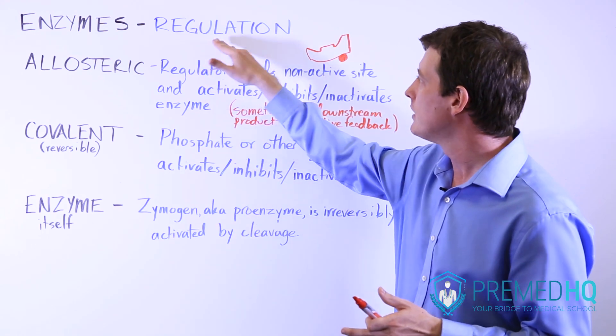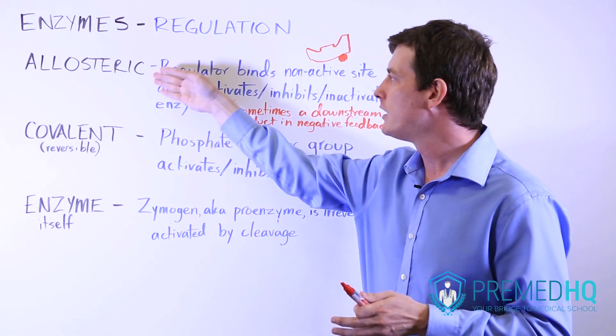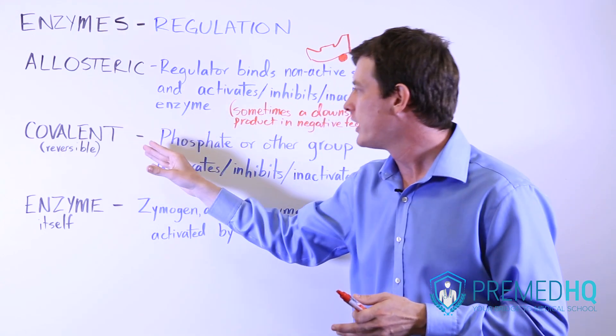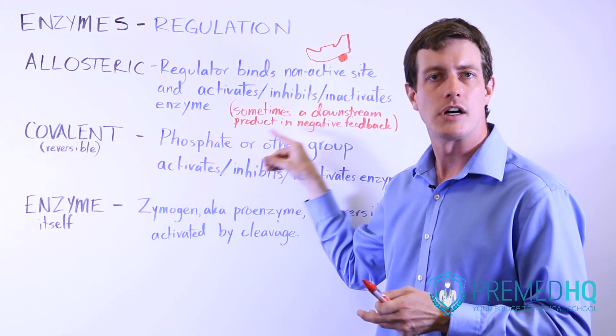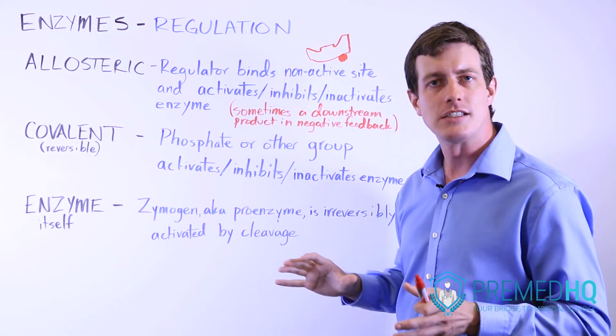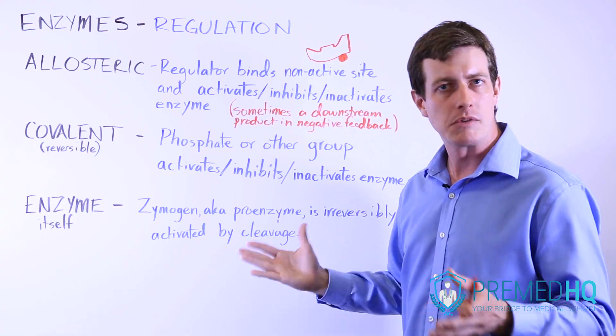So these are the big three for regulation of enzyme function: allosteric regulation at the nonactive site, covalent regulation usually involving a phosphate group, and then the release of zymogens, which are irreversibly activated once you cleave some of the bonds.